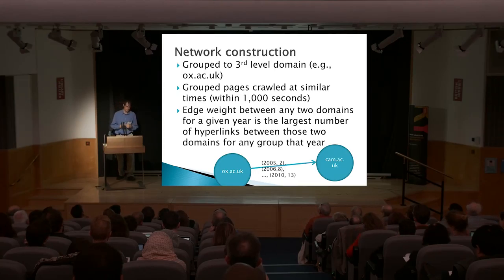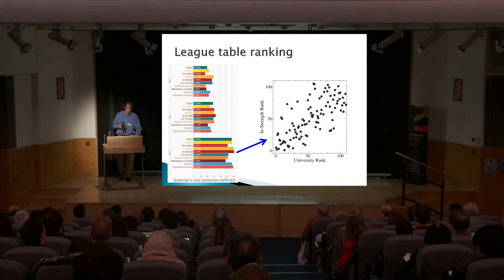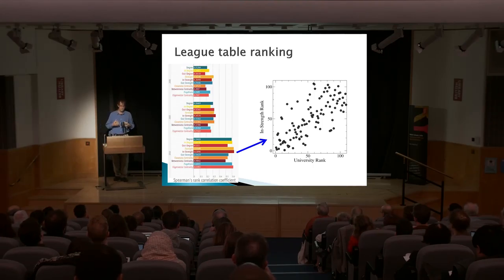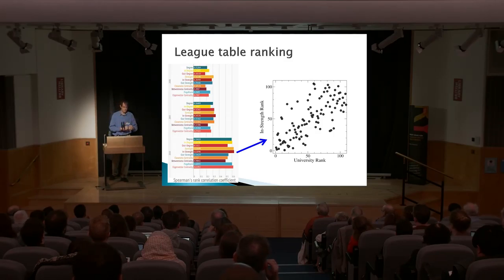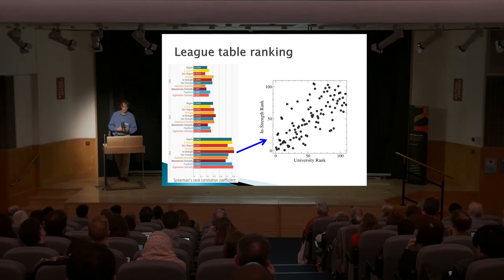There are some affiliations of universities like the Russell Group or the 1984 Group, and those were mixed — they weren't really represented within this network. But one thing that was represented was league table rankings. We took these from the Times for 2000, 2005, and 2010. Each group is a series of different measures looking at what is the most central university in terms of this hyperlink network. And we can see over time that the rankings and the centrality measures are coming closer and closer together, becoming more correlated.